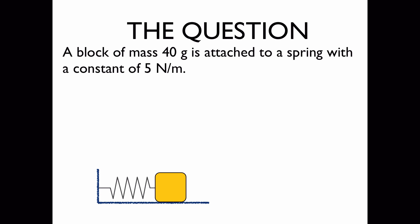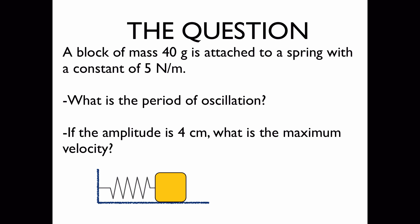The question: A block of mass 40 grams is attached to a spring with a constant of 5 N per meter. We'd like to know, what is the period of oscillation, and if the amplitude is 4 centimeters or 0.04 meters, what is the maximum velocity?